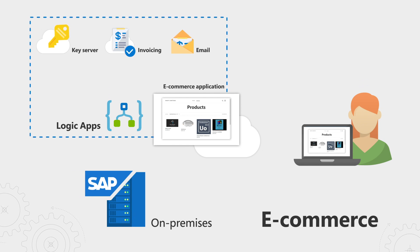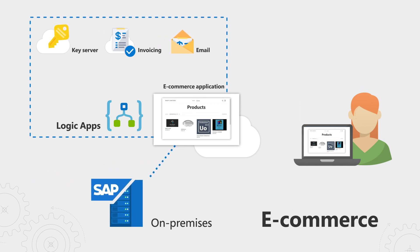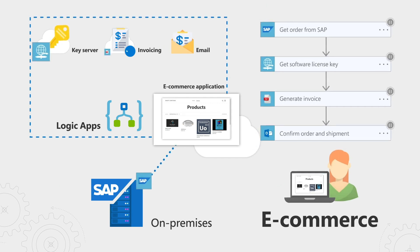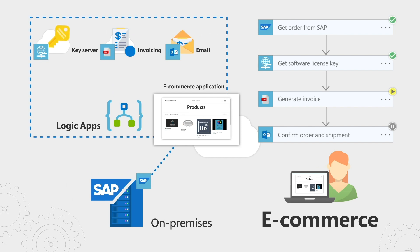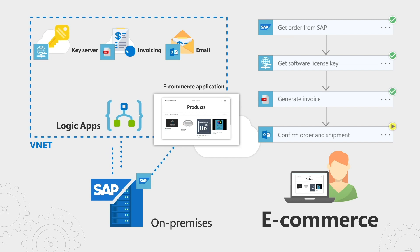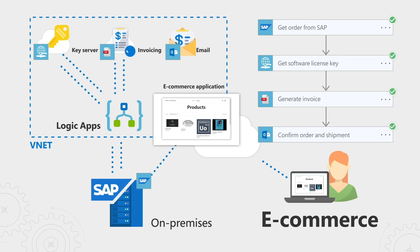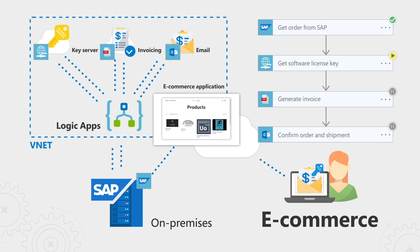We have an SAP system on-premises that will receive sales orders from our e-commerce site for software purchases. On the cloud, we also have a licensing server to generate keys, an invoicing system that will create PDF invoices, and an email system that will deliver the key and invoice to our customers. The goal is to connect them all together using Logic Apps and its connectors to fulfill the order once a purchase is made. We have a VNet that allows us to securely and bidirectionally connect SAP and Logic Apps together, so once a sales order is received, we'll trigger a new Logic Apps instance, generate the software licensing key, generate a new invoice, and then confirm the order via email to our customers.